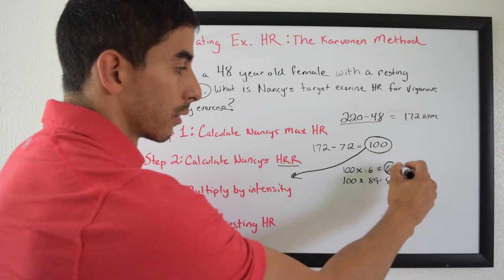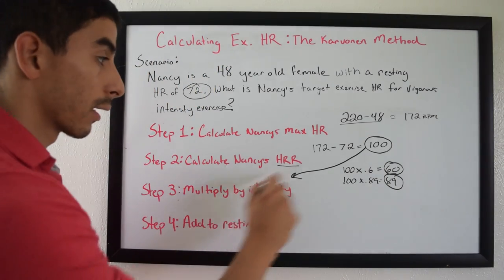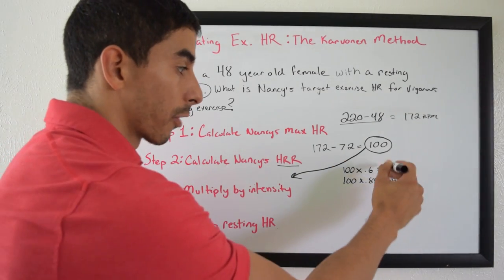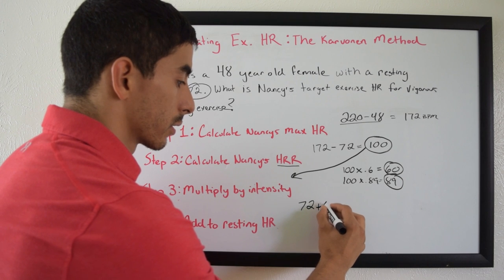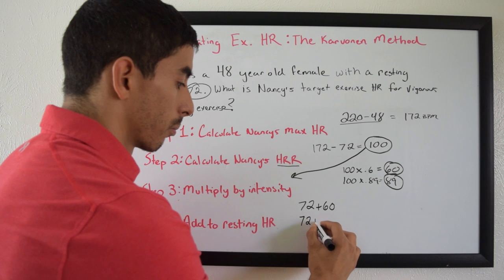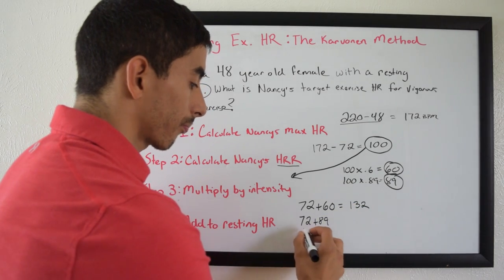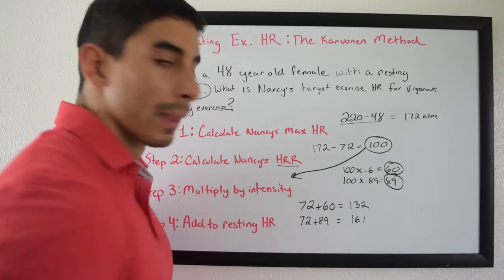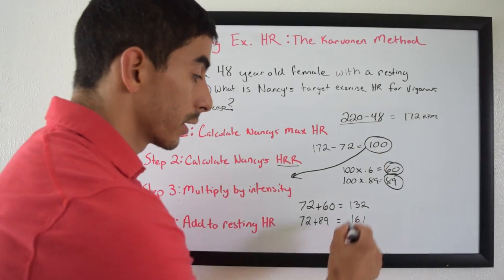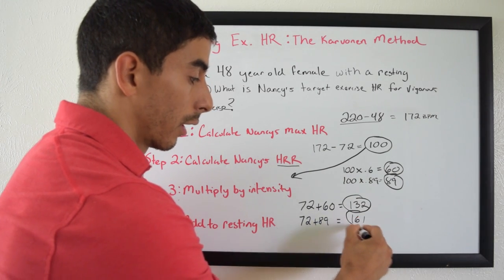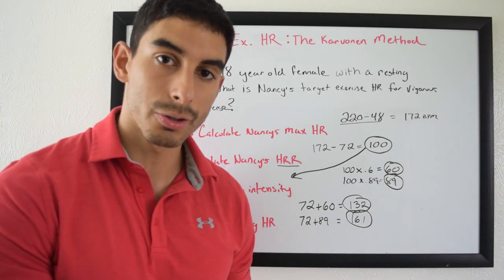Now you have these heart rate reserve values that you need to apply back to the resting heart rate. Step 4 is to take these values and add them to the resting heart rate. So you take 72 plus 60 and 72 plus 89, which gives you 132 and 161. In order for Nancy to be exercising at vigorous intensity according to the Karvonen method, she needs to exercise at a heart rate between 132 and 161. That's your answer — 132 to 161.